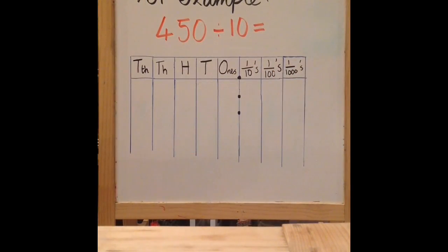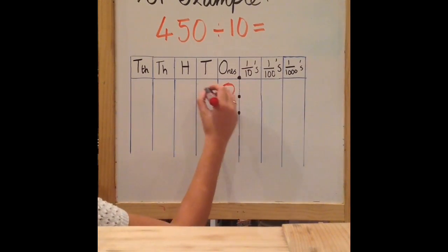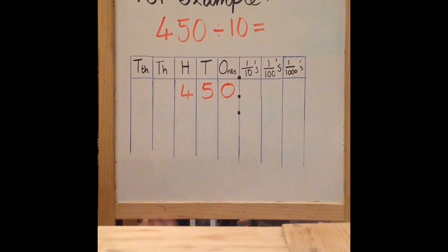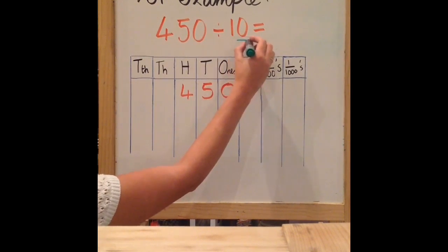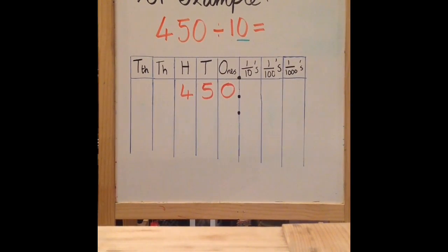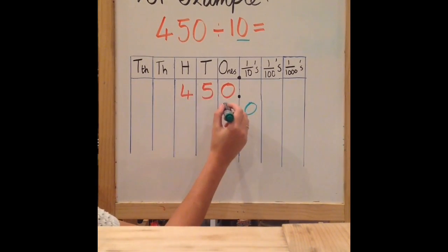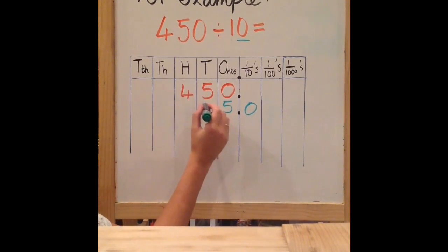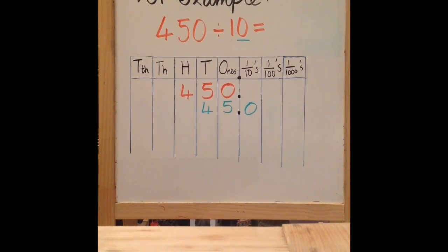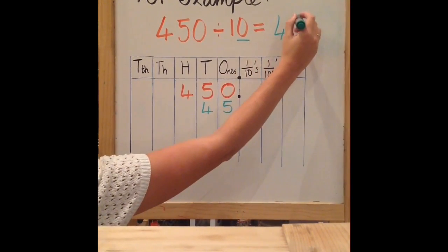If you are calculating 450 divided by 10, the first thing again is to put your 450 in the correct place value holders: 0 in the 1's, 5 in the 10's, and 4 in the 100's. Because I'm dividing, my number must be getting smaller, and because 10 has one zero, I'm moving my digits one place to the right. My 0 moves into the 10's column, my 5 into the 1's column, and my 4 into the 10's column. So my answer is 45.0, which is the same as 45. So 450 divided by 10 equals 45.